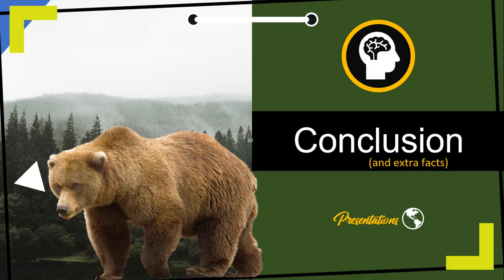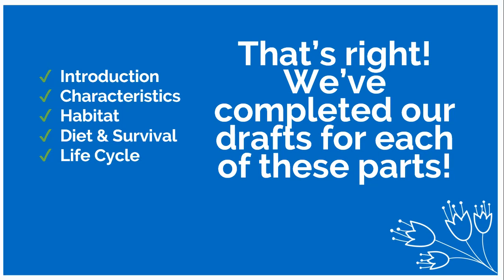Welcome to Sunday, April 26th, and today for your English lesson you are going to do your conclusion writing for your animal report. We're going to look at the rough draft today. So we've completed our rough drafts for our introduction, our characteristics, habitat, diet and survival, and life cycle sections. And that means that we are finally on the last one, and that is the conclusion.